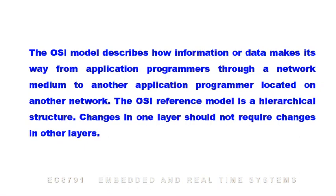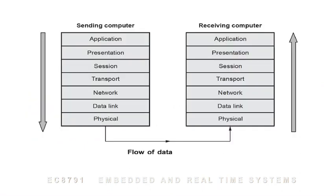The OSI reference model is a hierarchical structure. Changes in one layer should not require changes in other layers. In terms of data flow: the sending computer passes data from the application layer down to the physical layer, and the receiving computer passes data from the physical layer up to the application layer.